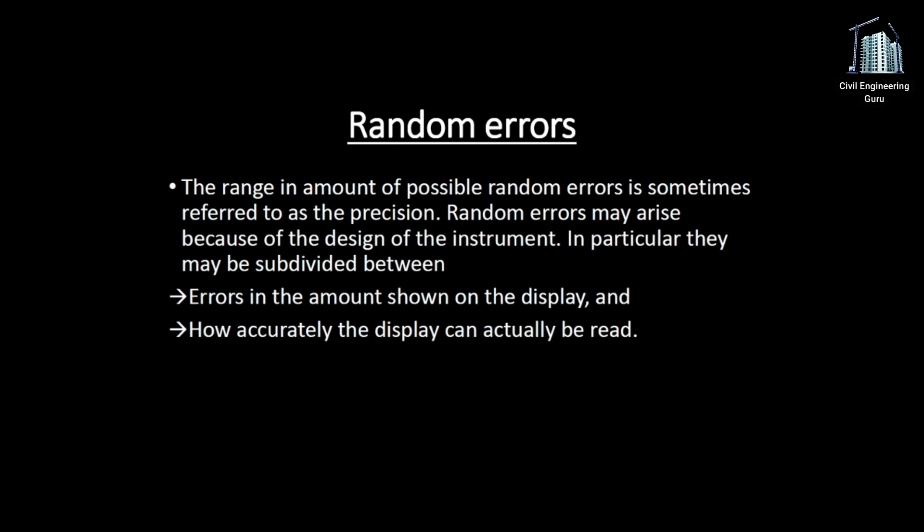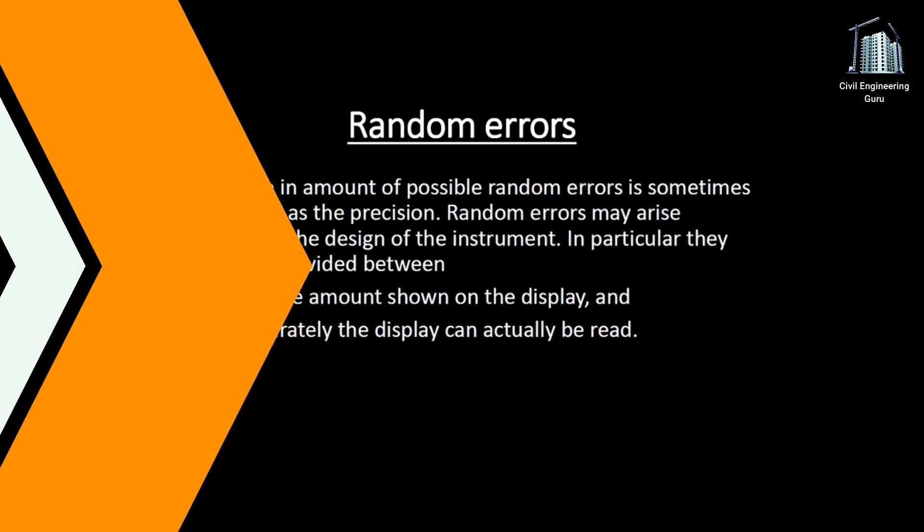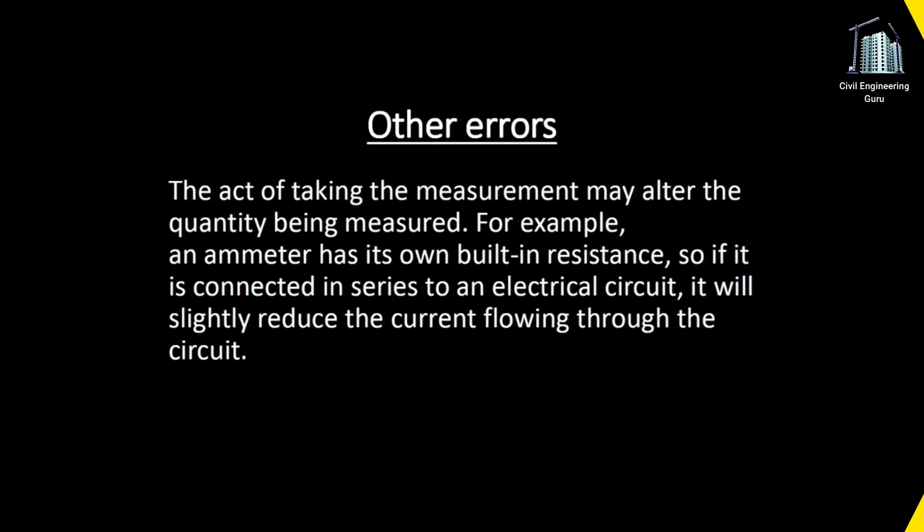Other errors can occur when the act of taking the measurement alters the quantity being measured. For example, an ammeter has its own built-in resistance, so if it is connected in series to an electrical circuit, it will slightly reduce the current flowing through the circuit.